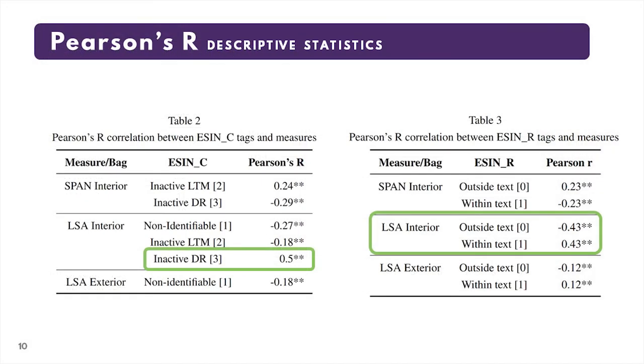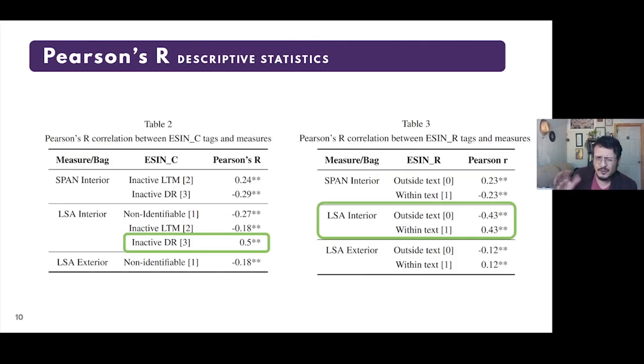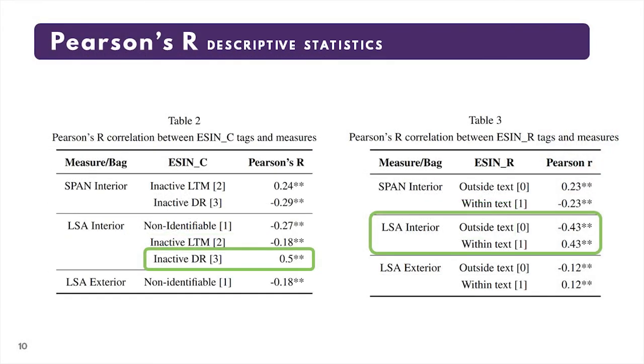For the study of correlation, it was found that only one of the bags that use the exterior of the phrases show correlation with LSA, but none with SPAN. However, for the interior, it was different. In the case of the CINSE tags, those that show mild to moderate correlation are shown in Table 2, from where we can point that the best correlation can be found between inactive by discourse register and inactive with LSA interior, with 0.5. For other tags in CINSE, no remarkable correlation was found.